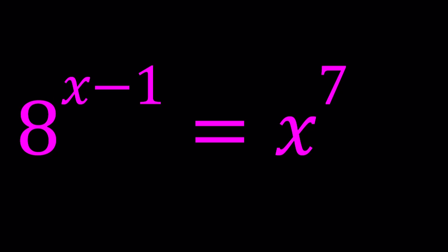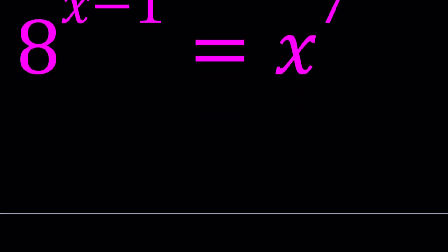I'm going to write 8 to the power x minus 1 as 8 to the power x divided by 8, which is 8 to the first power equals x to the 7th. And then let's cross multiply. That gives us 8 to the power x equals 8x to the 7th. So we have this exponential function on one side and the polynomial, the 7th degree septic polynomial on the other side.